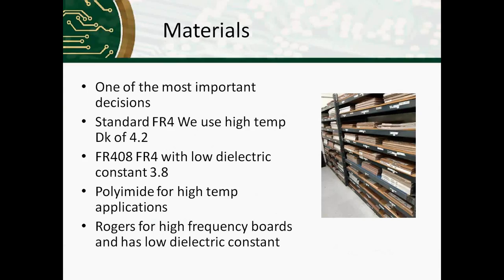Materials is one of the most important decisions you have to make with regards to performance and cost. You need to know exactly what factors are the most critical for your given design. This is a very full topic in itself, so here's a really brief description that we use at Royal Circuits regularly. Standard FR4, we use high temperature that is good for any lead-free application. It's got a dielectric constant of about 4.2. If you look up data sheets, they provide a range. 4.2 is the number that we use for our impedance calculations.